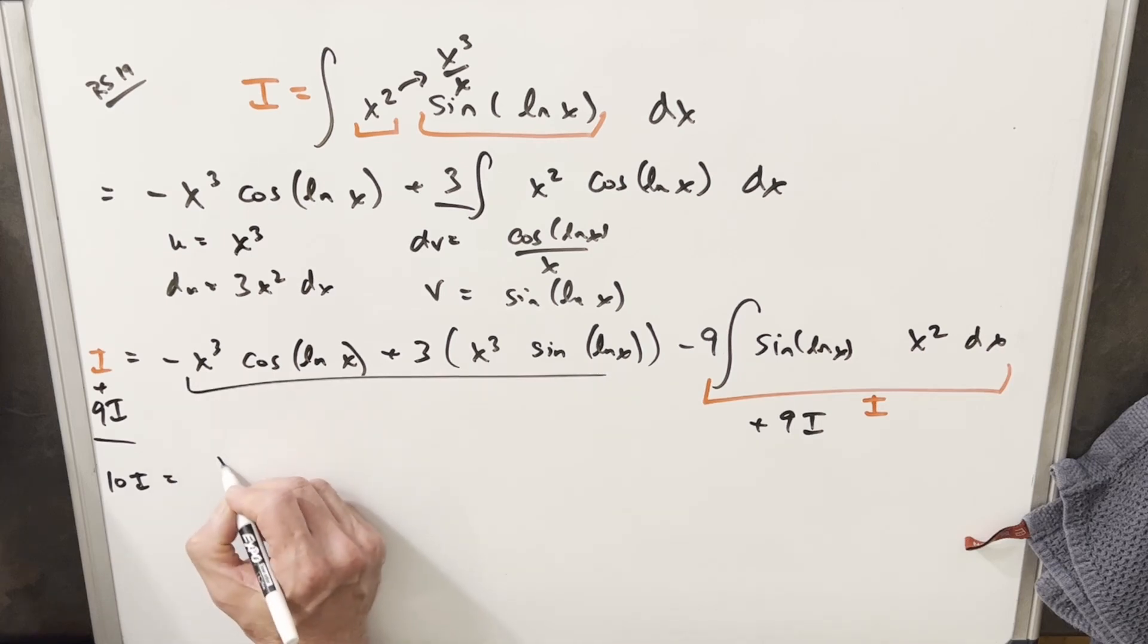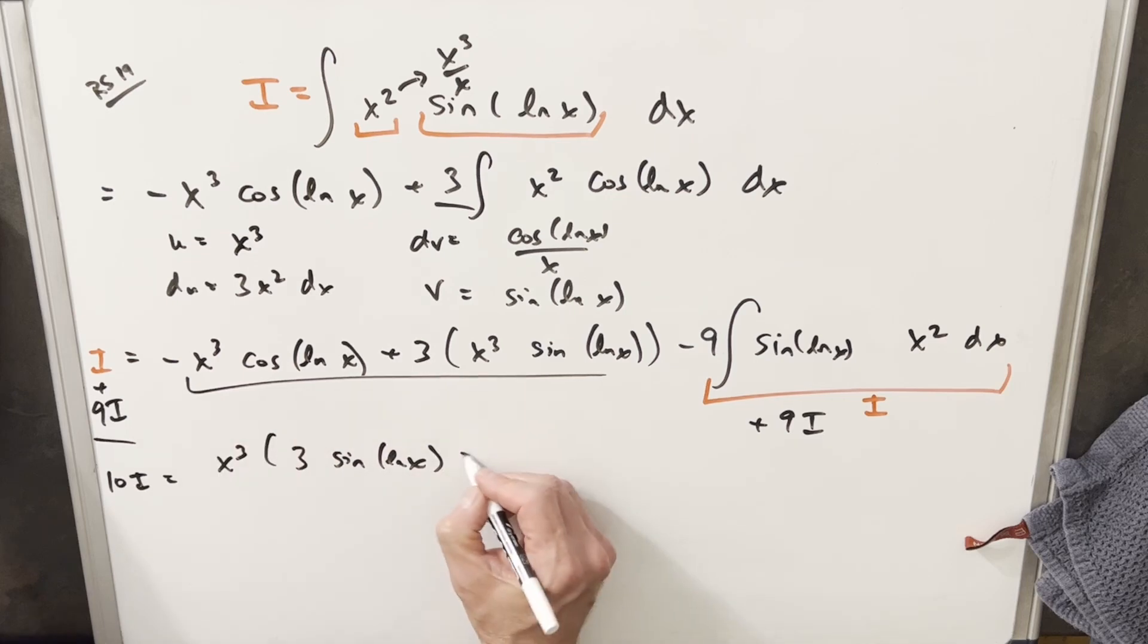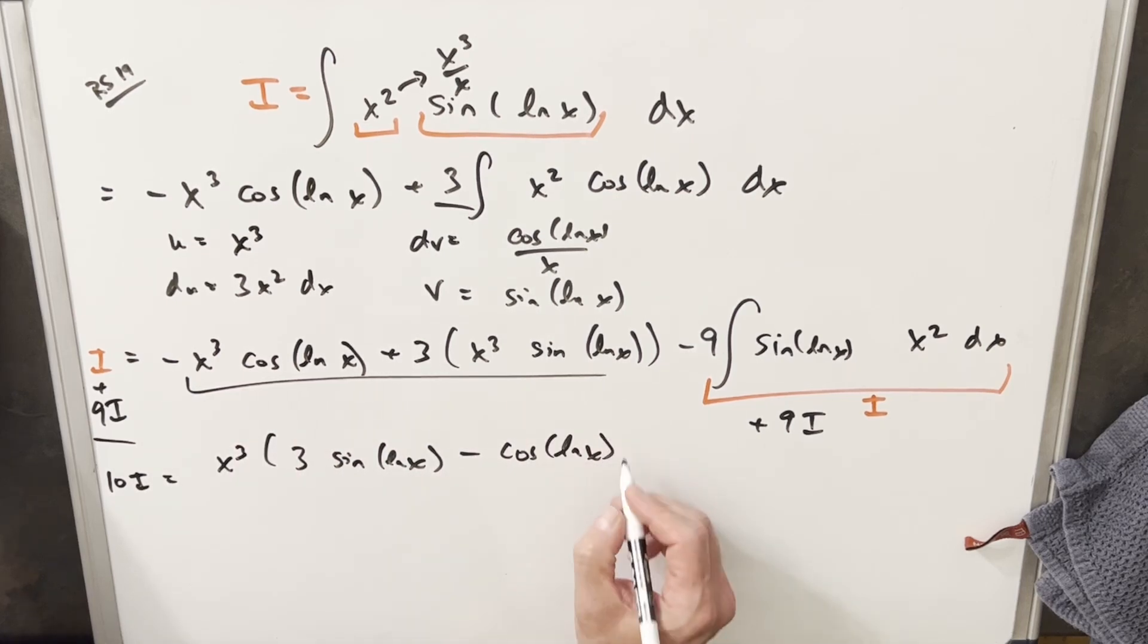I'm going to factor out an x cubed as we have an x cubed in common, and I'm going to rearrange it just for the minus sign. When we factor the x cubed out and we rearrange it, I'm going to put the sine first, so we're going to write this as 3 sine ln x, and then here we're going to have just a minus cosine ln x.